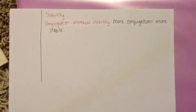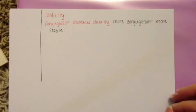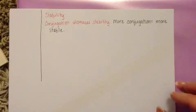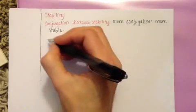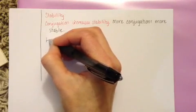We're going to talk throughout the chapter about why conjugation is related to stability. In this particular section, we don't get into the why. We just get into the experimental evidence that conjugation increases stability.